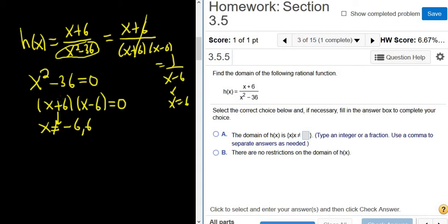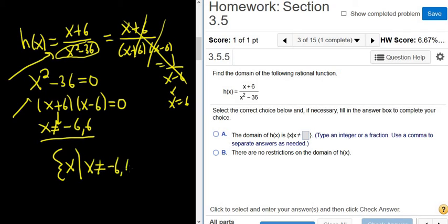So whenever you're looking for the domain, don't do this. Just go straight to the bottom and set it equal to 0 so you can see what x can't be. So the domain is the set of all x's such that x is not equal to negative 6 and 6.